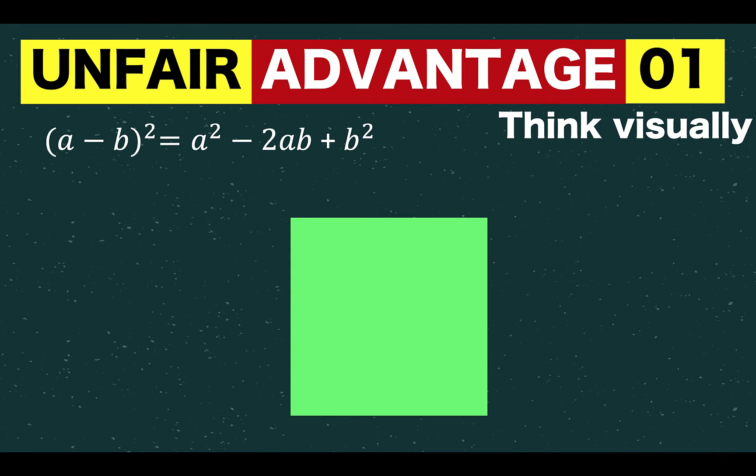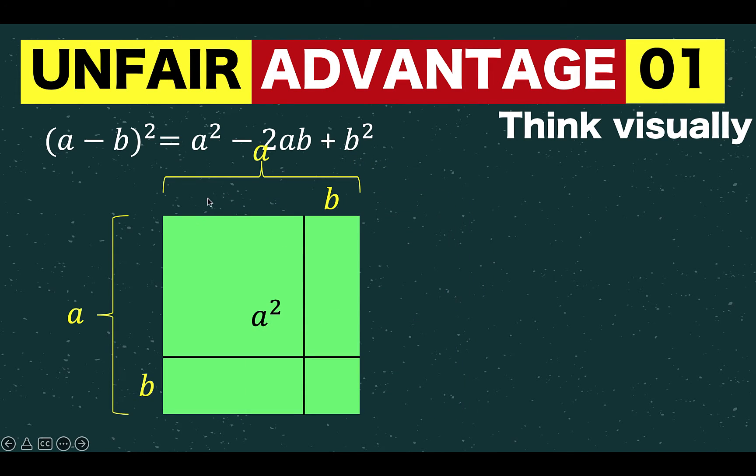We start with a square with a side length of a units. So a times a is a squared. That is the area of the green square. Now since here, the side length of the square is a minus b, that means you are going to subtract some quantity of magnitude b from this side length of a. And let's do that. So this is now our result.